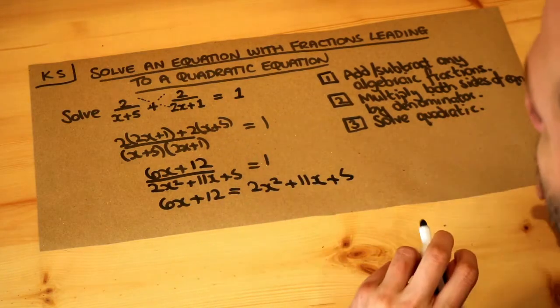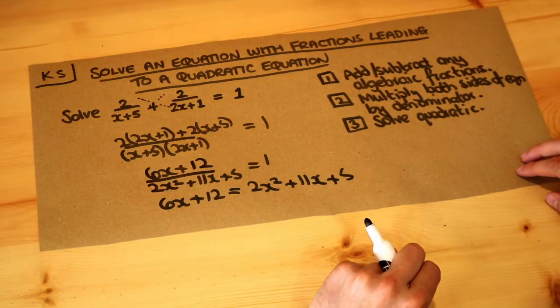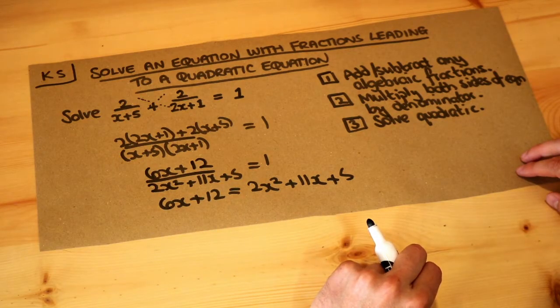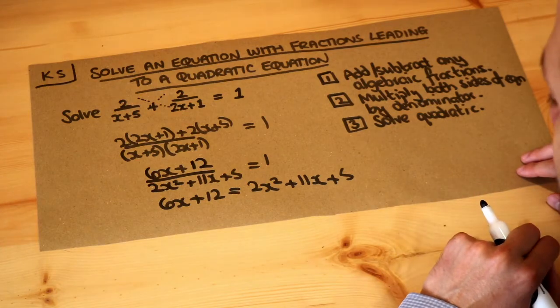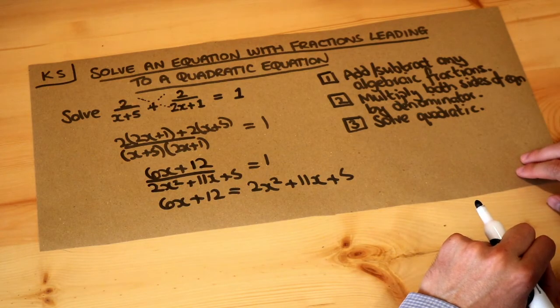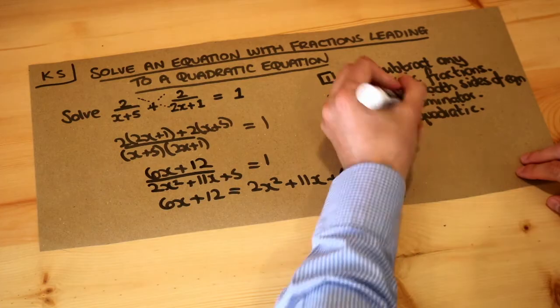This is starting to look good. We've got an equation now where there are no fractions at all. So now we solve the quadratic. Remember, to solve a quadratic equation we want zero on one side.